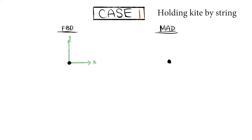In the first case, we'll follow a basic example of holding a kite by the string. In the free body diagram, we can treat all forces as if they act on the center of mass. The four forces present on the free body diagram are the tension in the string, pointing at an angle theta in the negative horizontal and negative vertical direction.